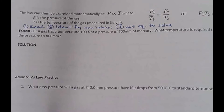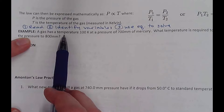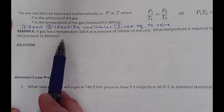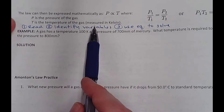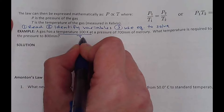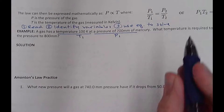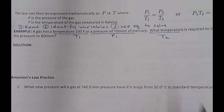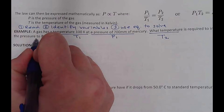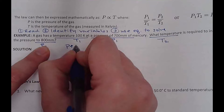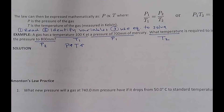A gas has a temperature of 100 degrees Kelvin at a pressure of 700 millimeters of mercury. What temperature is required to increase the pressure to 800 millimeters of mercury? The keyword 'has a temperature' tells me that's T1 — initial temperature. 'At a pressure of' gives me P1. 'What temperature' is the new temperature I'm trying to find, so that's T2. The pressure it's changing to — 800 millimeters — is P2. Since pressure is increasing, temperature should also increase.